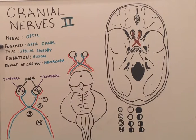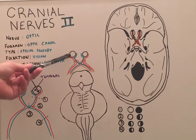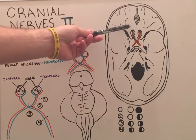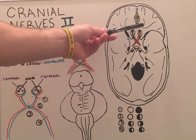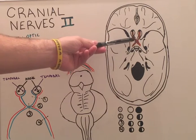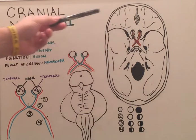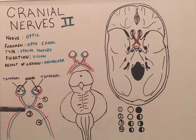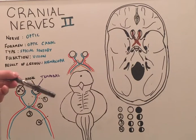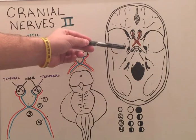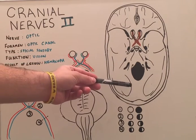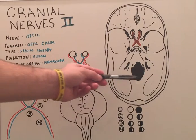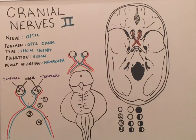The optic nerve begins essentially at our eyeball and continues in through the optic canal. These two optic nerves join at the optic chiasm, where they then branch once again and become the optic tracts, continuing on to the lateral geniculate body of the thalamus. From there, they traverse all the way to the back in the visual cortex of the occipital lobe in the brain.